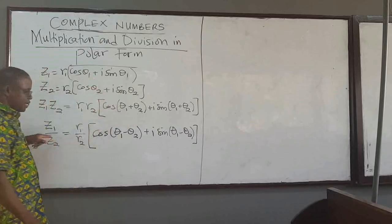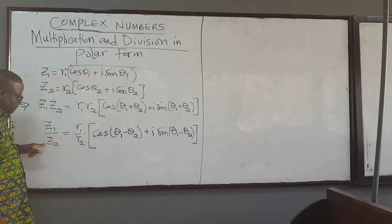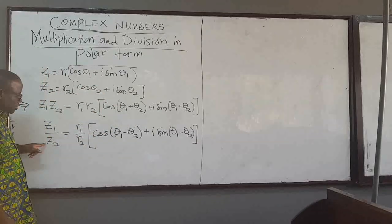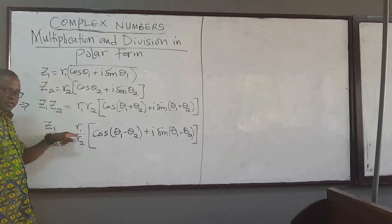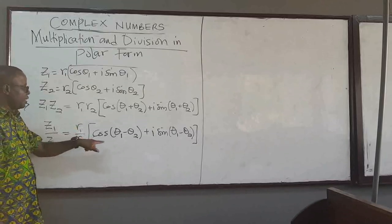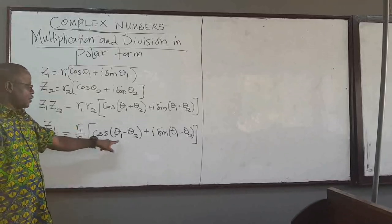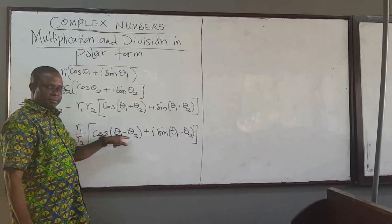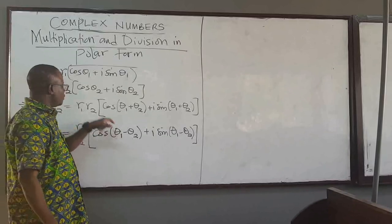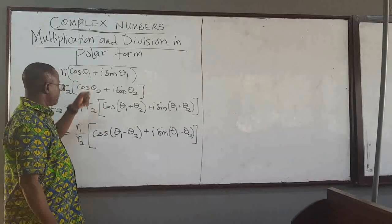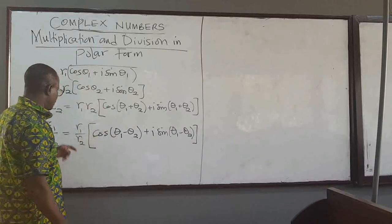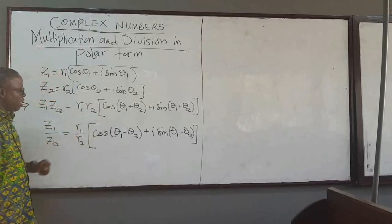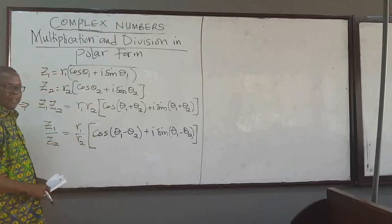And if you divide the two complex numbers, then the resulting modulus is the modulus of the first divided by the second, and the argument is the difference of the two arguments. This is powerful.